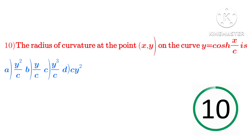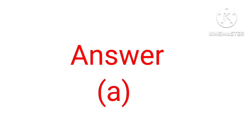The radius of curvature at the point x comma y on the curve y equal to cosh of x divided by c is: option a: y square divided by c, b: y divided by c, c: y cube divided by c, option d: cy square. Answer is option a.